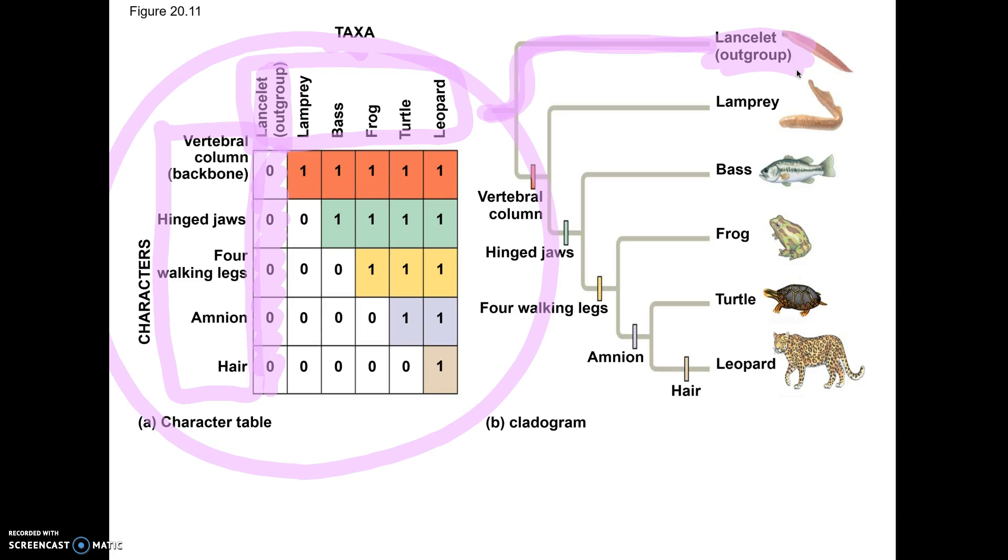They will always tell you also what the zeros and ones mean. It could be pluses and minuses. It could be zeros and ones. One would mean they have it. Zero means they don't. Plus means they have the trait. Zero means they don't. And the traits could also be numbered instead of being listed in words.